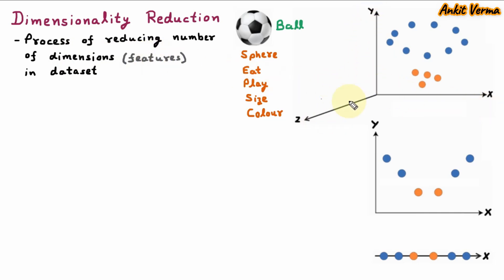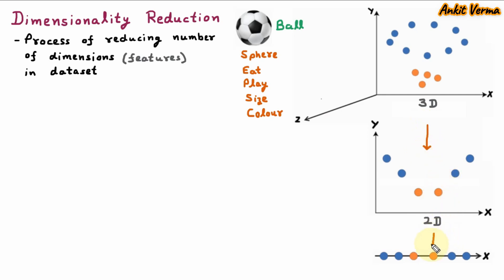Just like here we are having three dimensions. In dimensionality reduction, we are reducing the number of features. So these are five features, out of which we are taking three or four features — meaning we are reducing it. In the similar manner, we are reducing the dimension, just like the third dimension is converted to the second dimension and the second dimension is converted to the one dimension.